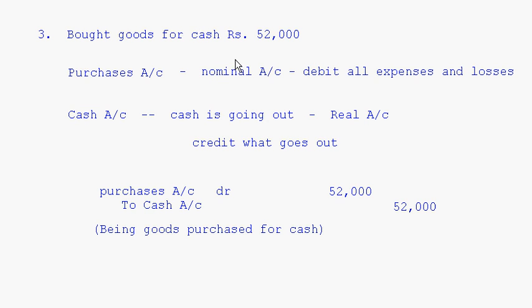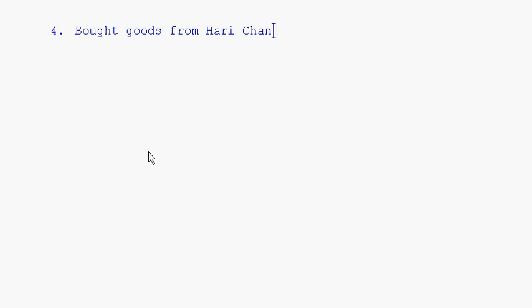This was a cash purchase where we pay cash immediately. There is also a credit purchase — meaning I am buying from a person or firm and not paying the amount immediately. In a credit purchase we are given some time to pay: 15 days, 1 month, 2 or 3 months. For example: Bought goods from Hari Chand, rupees 25,000.